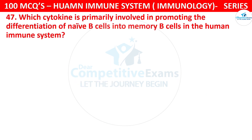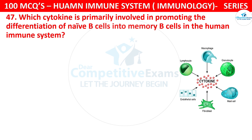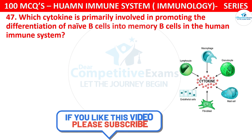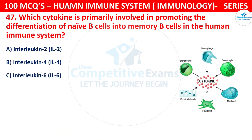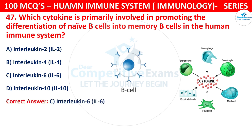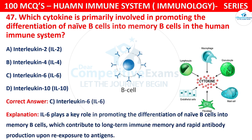Question number 47. Which cytokine is primarily involved in promoting the differentiation of naive B cells into memory B cells in the human immune system? The options are interleukin-2, interleukin-4, interleukin-6, or interleukin-10. The correct answer is C, that is IL-6. IL-6 plays a key role in promoting the differentiation of naive B cells into memory B cells, contributing to long-term immune memory and rapid antibody production upon re-exposure to antigens.